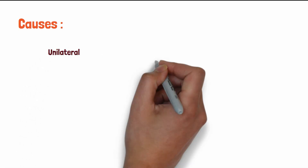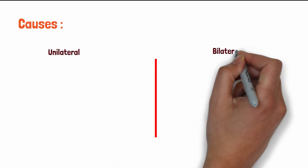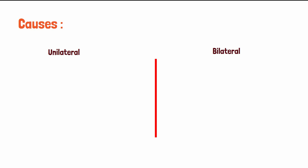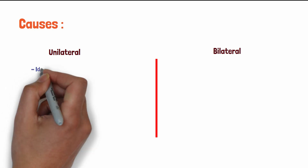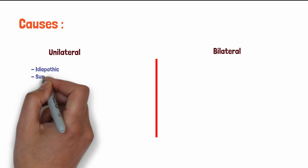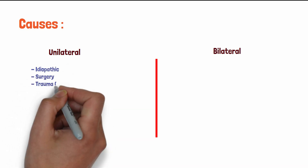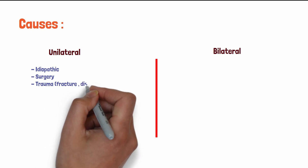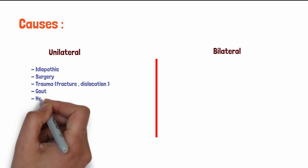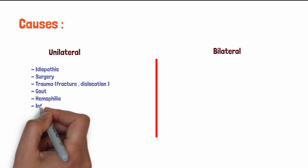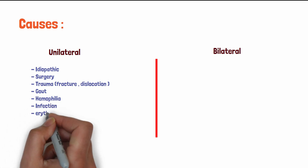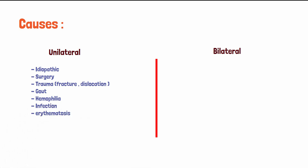The causes of avascular necrosis of the femoral head can be divided into two parts: unilateral and bilateral. If there is involvement of only one limb or one femoral head, that is unilateral. Unilateral causes include idiopathic, surgery, trauma with fracture or dislocation of the femoral head, gout, hemophilia, infection, and lupus erythematosus.